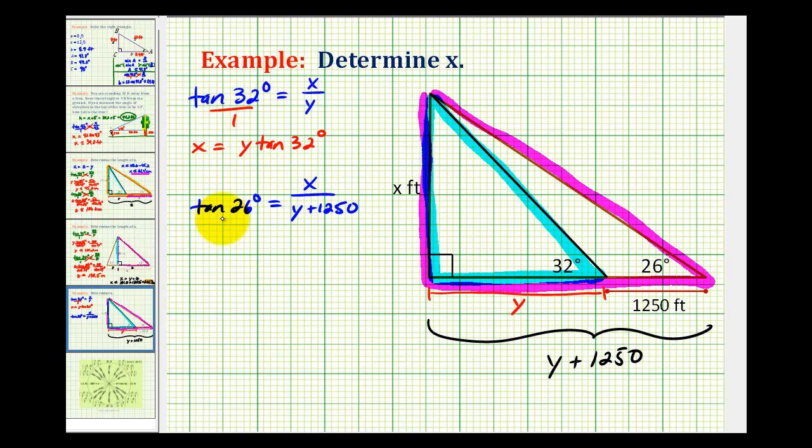And again, let's go ahead and cross multiply. So here we'd have x equals tangent 26 degrees times y plus 1,250.